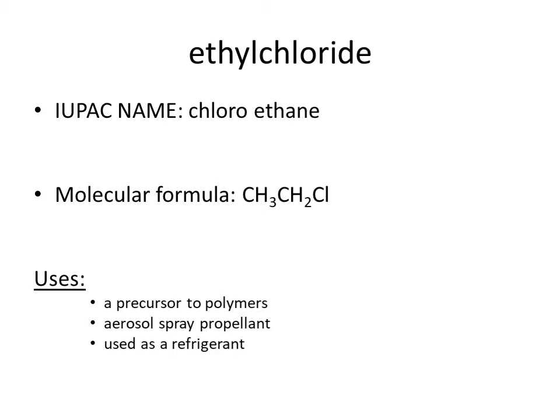The molecular formula of ethyl chloride is CH3CH2Cl. This is the IUPAC name — chloroethane — and this is the molecular formula for ethyl chloride. According to the syllabus, you need to know just the structure and uses.